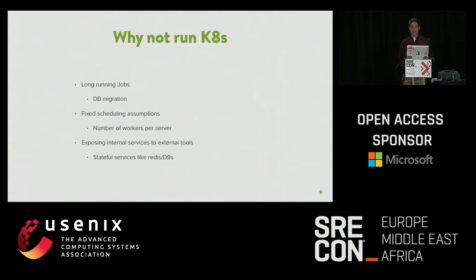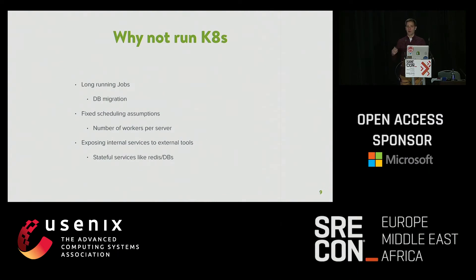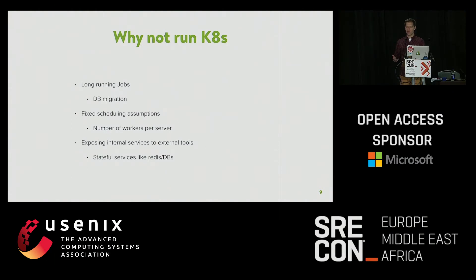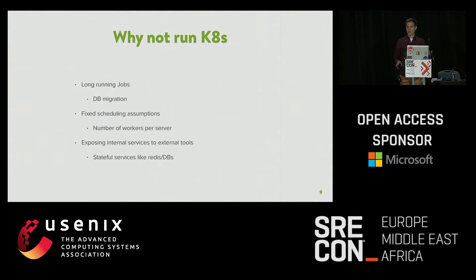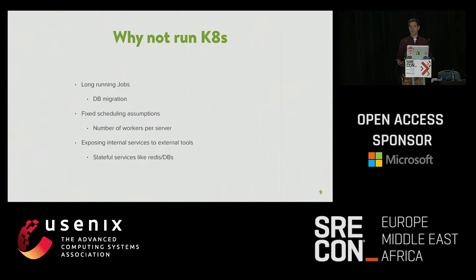On the other hand, there are reasons not to. Rails has long-running jobs — things like database migrations or data migrations — and Kubernetes doesn't like this. It wants to, when you deploy, tear down all old pods and bring up new ones without downtime. But if you have long-running things, you need to leave old pods running and you're fighting against the framework. These aren't necessarily insurmountable; they're just things you need to be aware of.